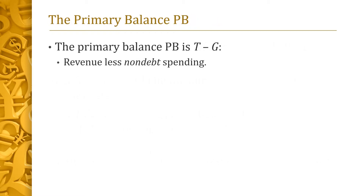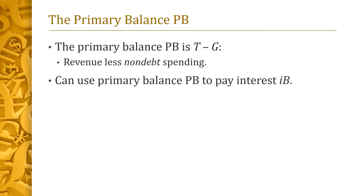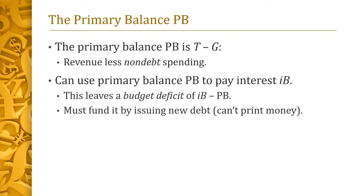We now define the primary balance, denoted PB, as T minus G — the government's revenue T minus its non-debt spending G. But recall that in addition to its non-debt spending G, the government also owes interest I times B on its debt. It first uses its primary balance PB to cover this. The remaining interest owed, IB minus PB, is called the budget deficit, and it must be funded by issuing new debt. We assume in this video that the government cannot cover its deficit by printing money.